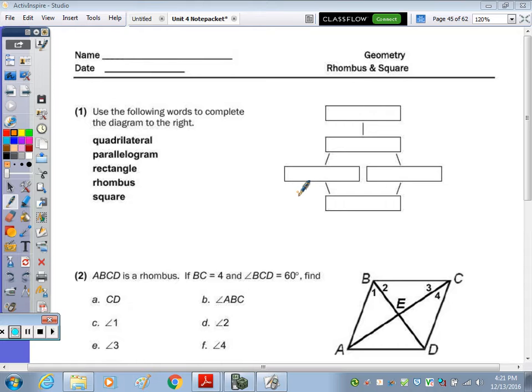In number one, it says to use the following words to complete the diagram to the right. Well, whatever you put in this top box must include everything below it, or everything below it must be this. And that would be your four-sided polygons. So quadrilateral, and I'm going to abbreviate, is at the top.